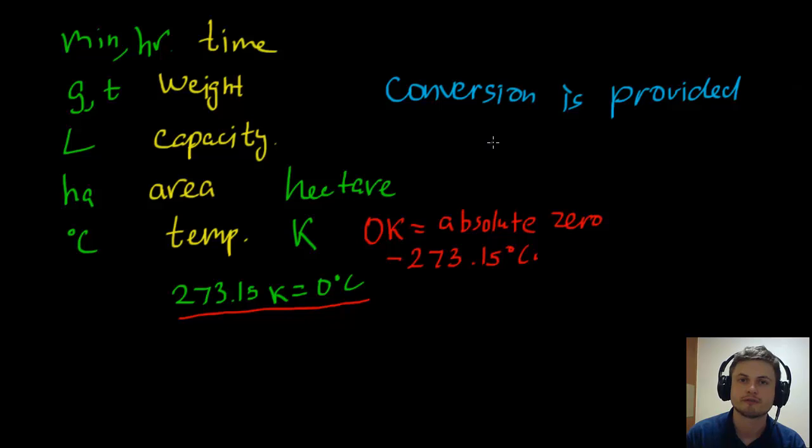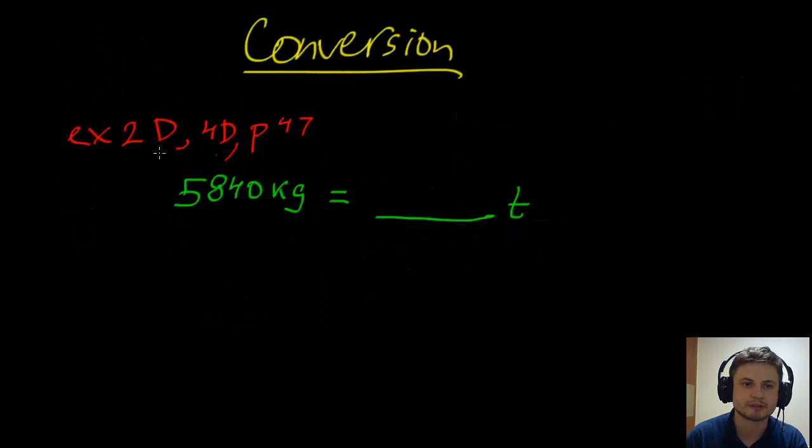So for example, let's just try to convert a few of these things. So let's take a look at this simple example, it's example 2D, 4D on page 47 in your books, and it's asking you to convert 5,840 kilograms into tons. So if you remember how to convert kilograms into tons, basically one ton is a thousand kilograms. In other words, you have to divide this number right here by a thousand, and you'll get, you can do this on your calculator or you can just do it in your head, and what you'll get is 5 tons, or 5.84 tons, and that's the answer for this question.